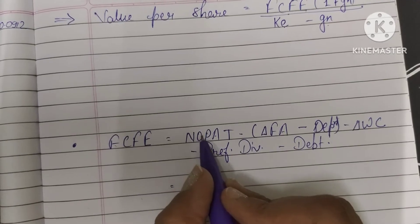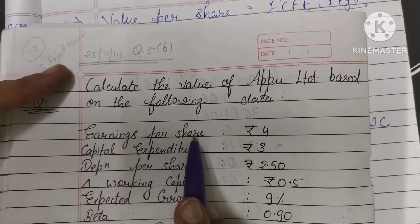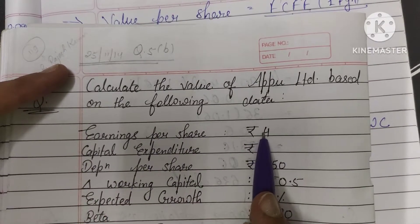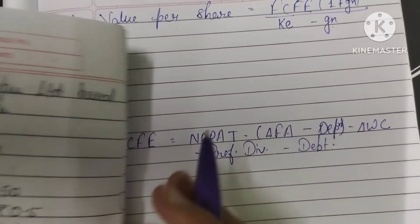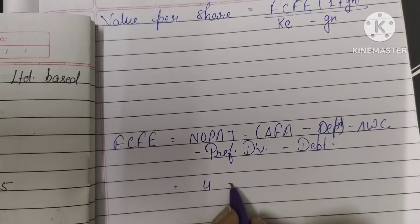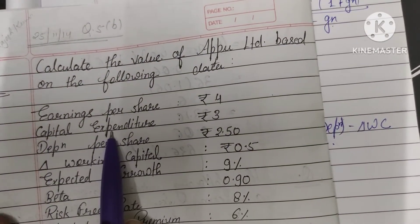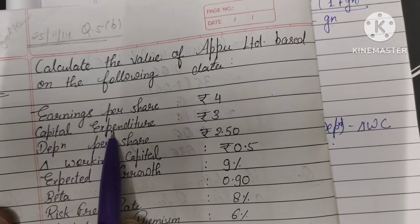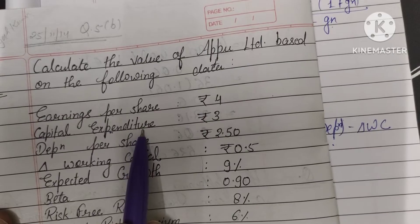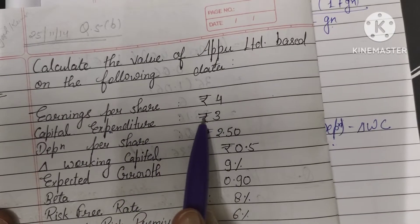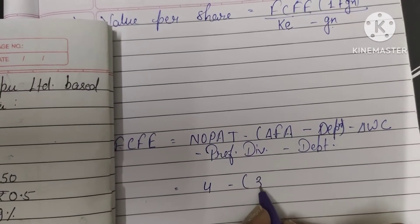Now from the question, NOPAT — that is Earning Per Share — is 4. Next is change in fixed assets: capital expenditure is the expenditure on assets like building, land, machinery, etc., which is given as 3. So we write change in fixed assets as 3.